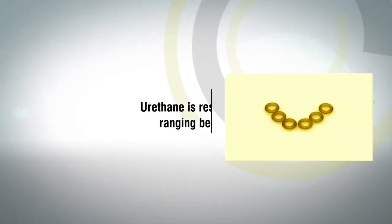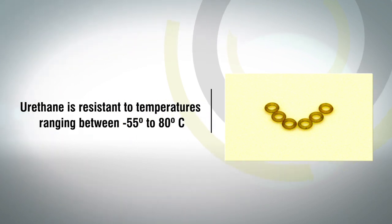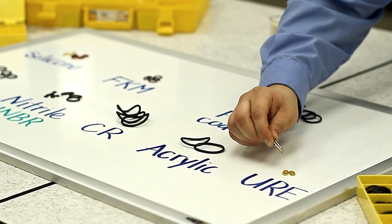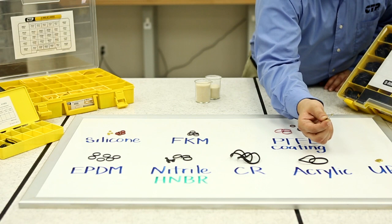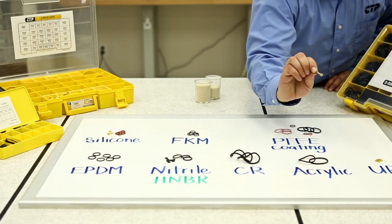Urethane is resistant to temperatures ranging between minus 55 degrees Celsius to 80 degrees Celsius and is also widely used under applications that are constantly exposed to oxygen, ozone, fuel, and oils.